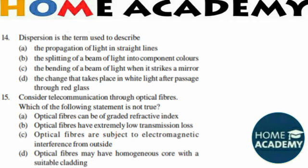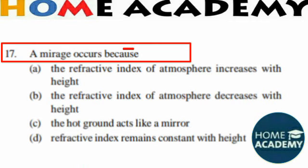Question number 17: A mirage occurs because of which phenomenon? The correct answer is that the refractive index of the atmosphere increases with height. Mirage occurs because the refractive index of the atmosphere increases with height.